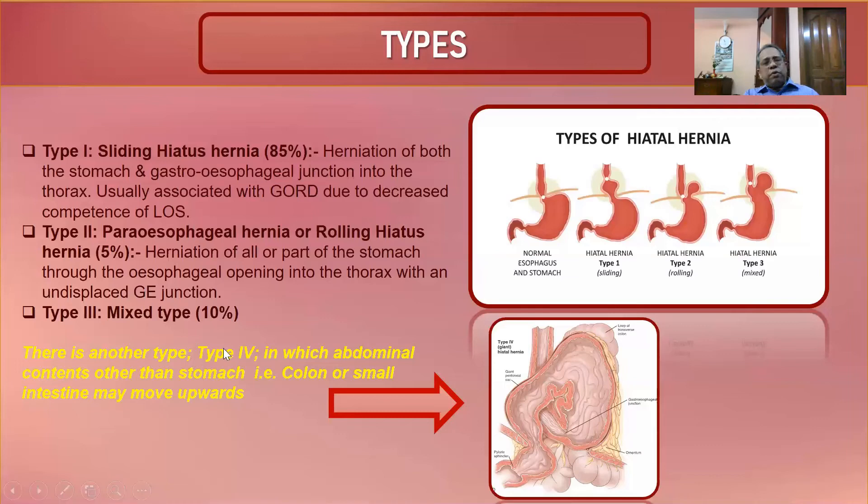Type 4 — where abdominal contents other than stomach, such as colon or small intestine, move upward — is not required for undergraduate study. Only the three main types need to be memorized.